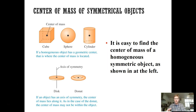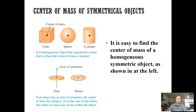Let's start with center of mass. The center of mass is, as the name implies, the center of the mass of the object — the point at which there's an even amount of mass distributed on all sides of that location. For symmetrical objects that are homogeneous, meaning there's even density at all locations, the center of mass is easy to find — it's just the geometric center. But for objects without uniform mass distribution, it's different.